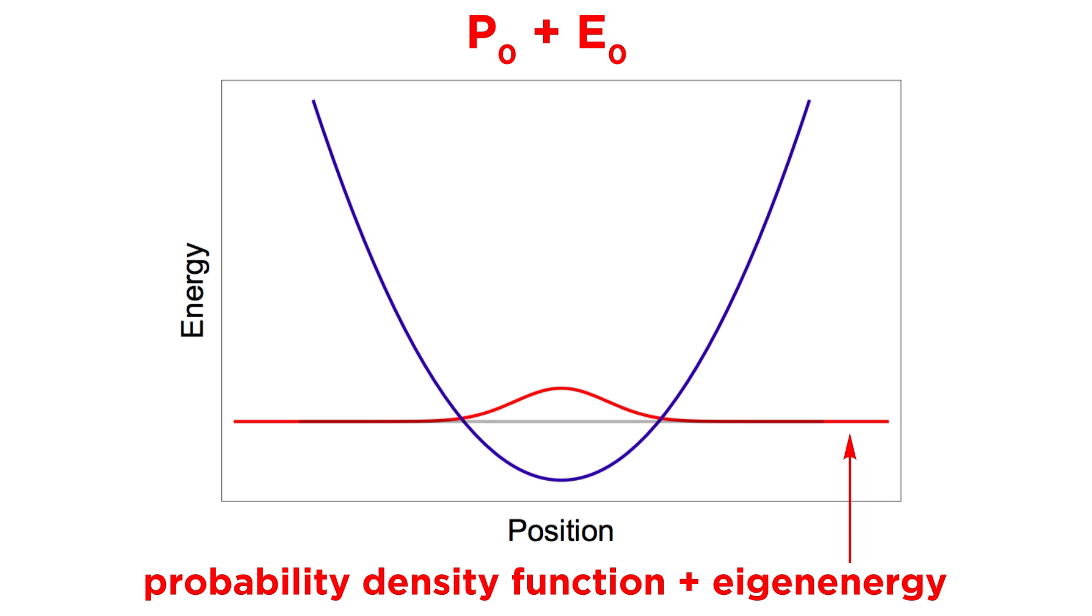To get an idea of how these states are distributed, this is how the ground state would look if we plot p plus e, that is, the probability density function plus the eigenenergy of a particular eigenstate, together with the harmonic potential. This is a common way to visualize the eigenstates distributed along the potential where they live. So to be clear, the gray line represents the eigenenergy of the ground state, and the blue line is the harmonic potential, V of x.